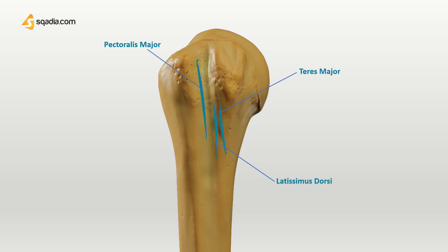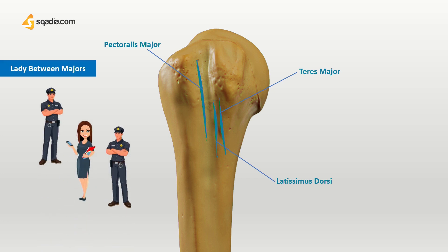An easy way to remember the relation of these muscles as they insert in the intertubercular sulcus is via the following mnemonic: 'Lady between two majors.' The lady here stands for the latissimus dorsi, while the majors will remind you of the teres major and the pectoralis major muscle.